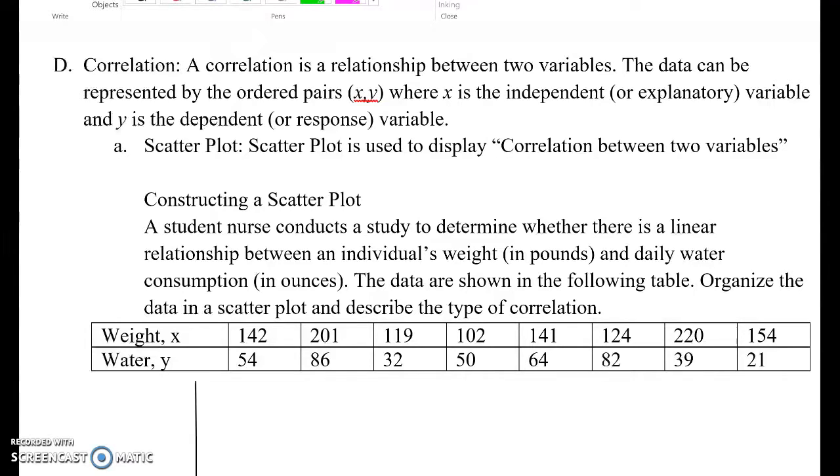In this case, we're using a scatter plot to show two quantitative values correlation. Let's construct a scatter plot. A student nurse conducts a study to determine whether there is a linear relationship between an individual's weight and daily water consumption. The data are shown in the following table. Organize the data in a scatter plot and describe the type of correlation.